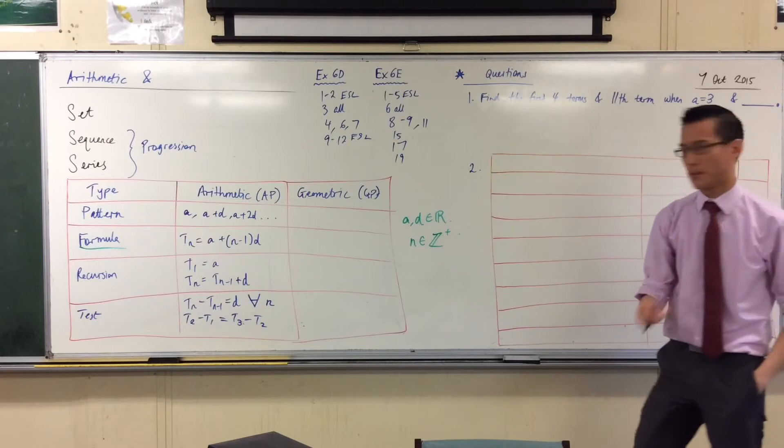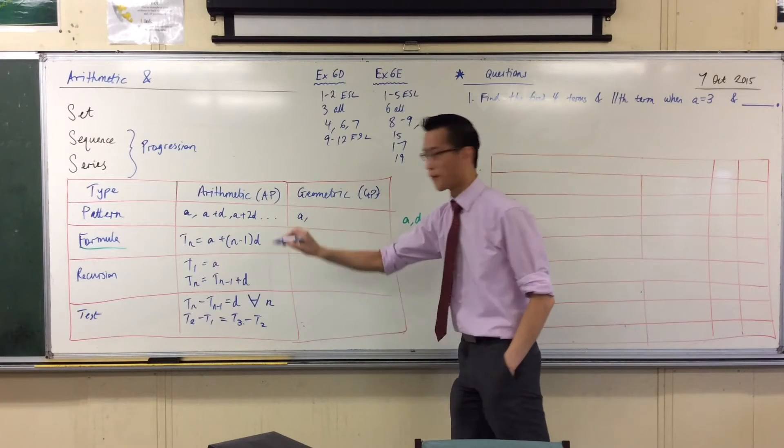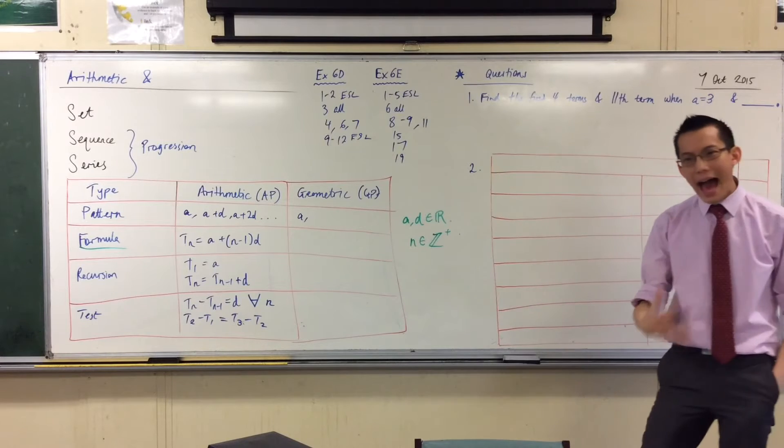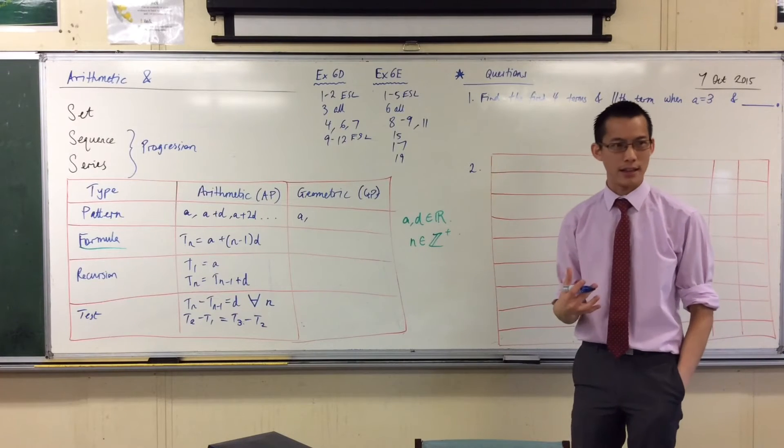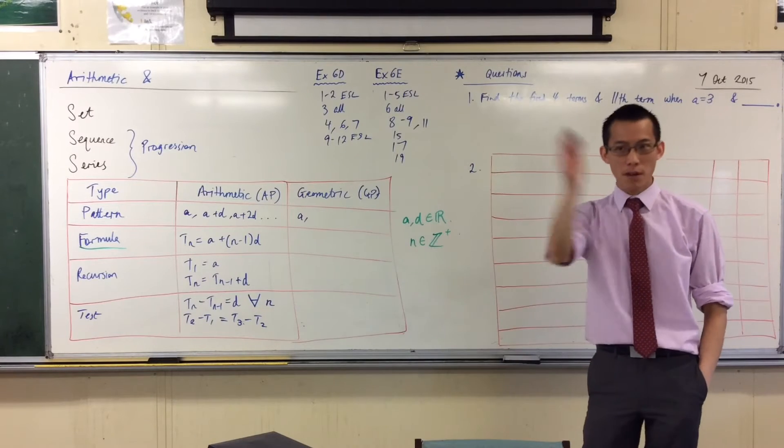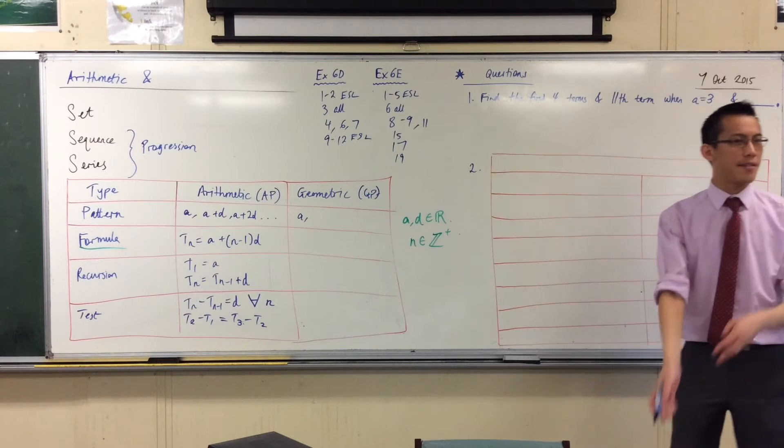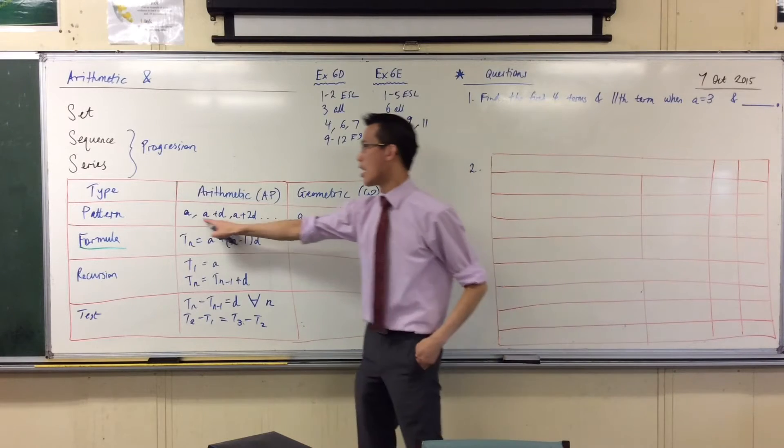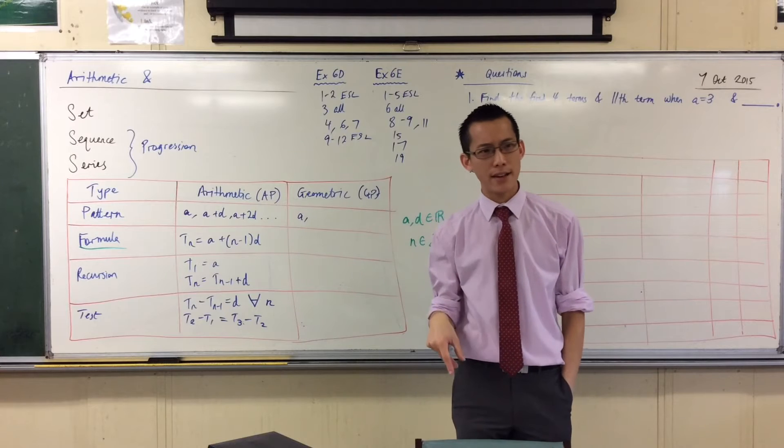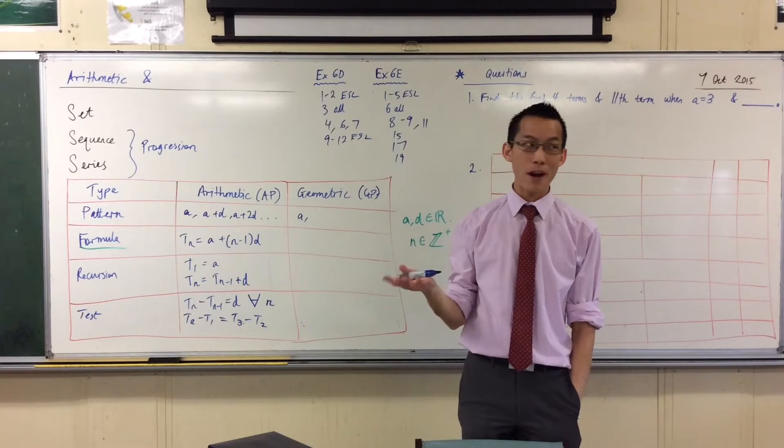The hallmark of a GP is very similar. You still start with the first term that we still call A, but instead of adding the same thing repeatedly, you multiply. You multiply, and then you multiply, and then you multiply. You choose the same number every time. Now, because here we're adding, we called it a difference, when you multiply by something over and over again, we tend to call that a ratio.